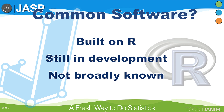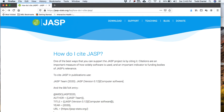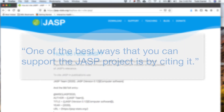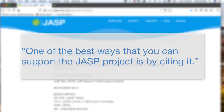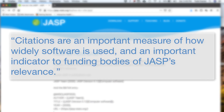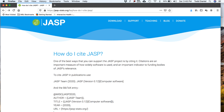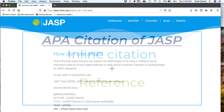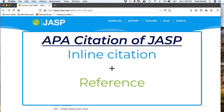And there's one more thing. On their website, the JASP developers say this: one of the best ways that you can support the JASP project is by citing it. Citations are an important measure of how widely software is used, and an important indicator to funding bodies of JASP's relevance. All of this says to me that when I use JASP, I should provide an inline citation with proper name and version number, and a reference in the references section.